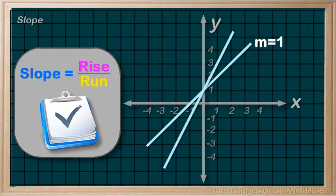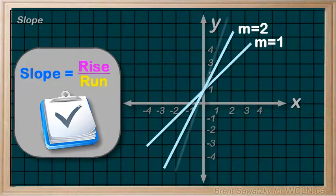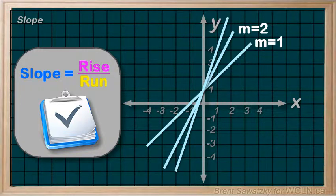Now this line has a bigger slope, that is, it's steeper. Its rise is greater over the same run, or m = 2. This line has an even bigger slope, it's steeper yet, m = 3.